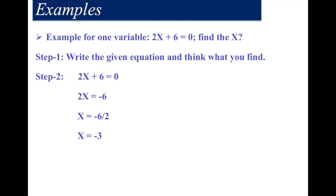Now I will explain one example of how to find the variable. The problem is: 2x plus 6 is equal to 0. We need to find x, or solve the equation. First, identify what is being asked — we need to find the x value. So: 2x equals minus 6 (moving the plus 6 to the right side, the sign becomes minus). Therefore x equals minus 6 divided by 2, which simplifies to x equals minus 3.